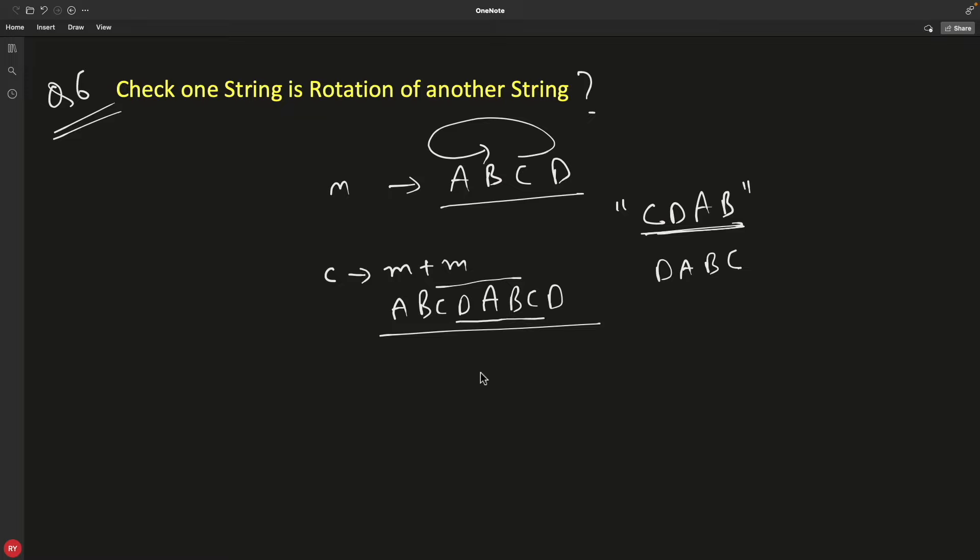So first step, if you are writing a program, first step should be the length of this main string and the rotated string should be similar. Then only it makes sense to find if it is rotated or not, correct?